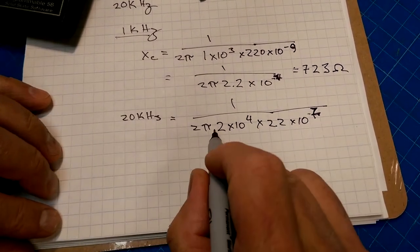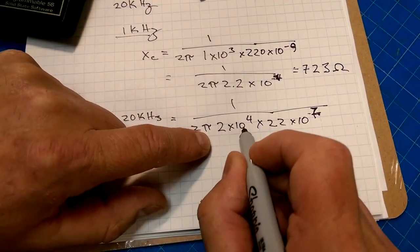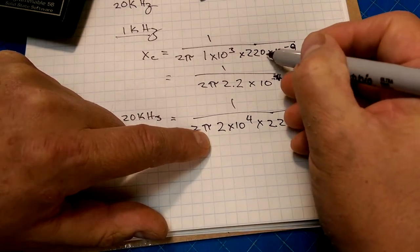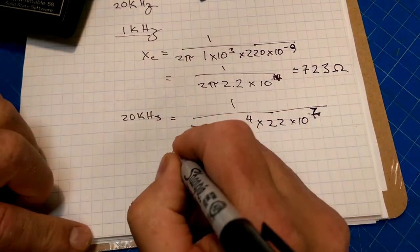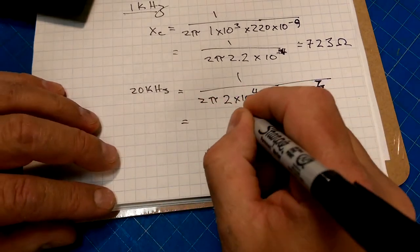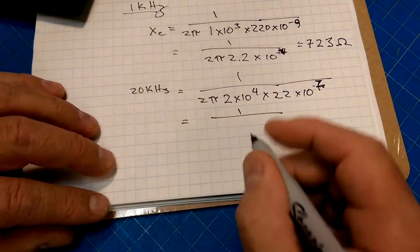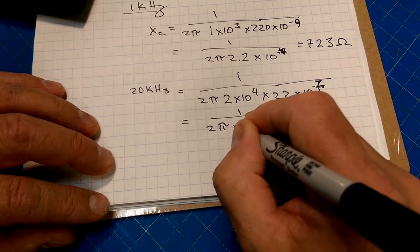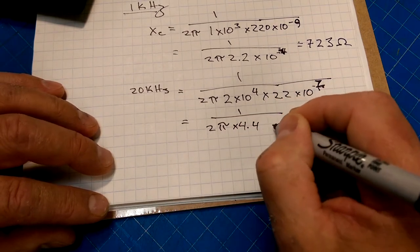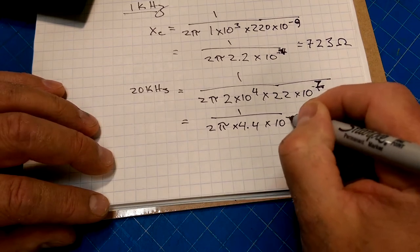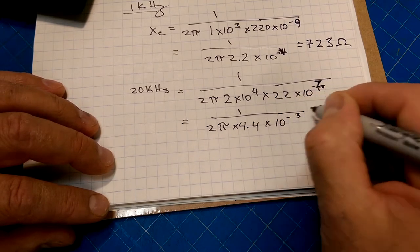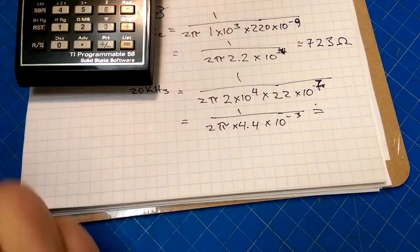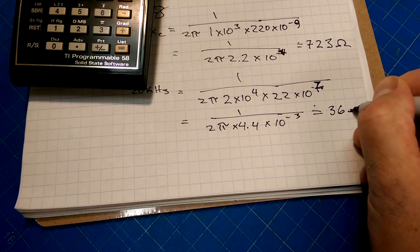So that's about 723 ohms. And at 20 kHz, we've got 2 pi, 2 times 10 to the 4, which is 20 kHz, times 2.2 times 10 to the negative 7. So that's about 797, so that's equal to 1 over 2 pi, 4 times 4.4 times 10 to the negative 3, and that's approximately equal to 36 ohms.